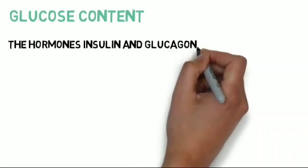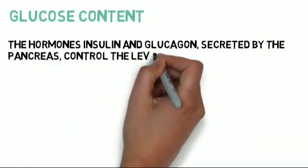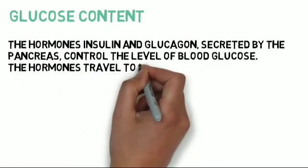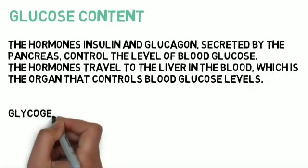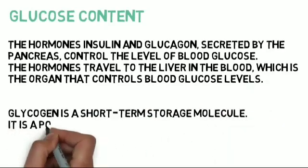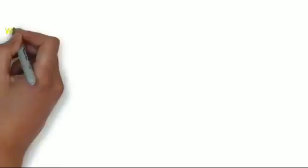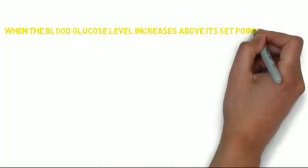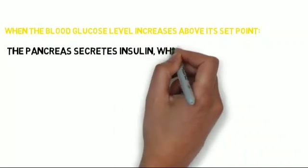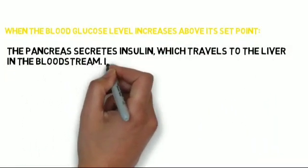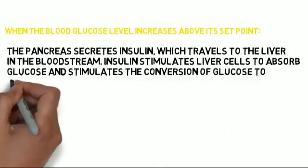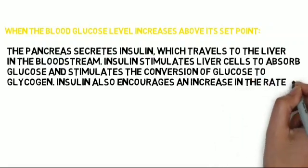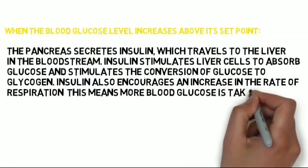The hormones insulin and glucagon, secreted by the pancreas, control the level of blood glucose. The hormones travel to the liver in the blood, which is the organ that controls blood glucose levels. Glycogen is a short-term storage molecule; it is a polymer made of glucose molecules. When the blood glucose level increases above its set point, the pancreas secretes insulin, which travels to the liver in the bloodstream. Insulin stimulates liver cells to absorb glucose and stimulates the conversion of glucose to glycogen. Insulin also encourages an increase in the rate of respiration, meaning more blood glucose is taken up by cells and respired. All of this reduces blood glucose levels.